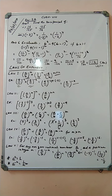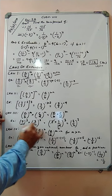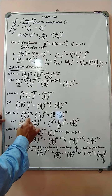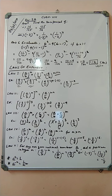Law 3: (a by b) to the power m, multiplied by (c by d) to the power m — here the bases are different but the powers are same — can be written as (a by b into c by d) to the whole power m. Example: 7 to the power 3, multiplied by (3 by 14) to the power 3 — the powers are the same — so it becomes (7 into 3 by 14) to the whole power 3, and 7 by 14 simplifies to give (3 by 2) to the whole power 3.